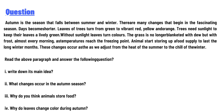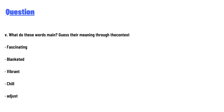Read the above paragraph and answer the following questions: first, write down its main idea; second, what changes occur in the autumn season; third, how do animals store food; fourth, where do leaves change color during autumn; and fifth, guess the meaning of these words through context: fascinating, blanketed, vibrant, chill, and adjust.